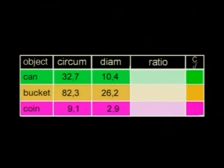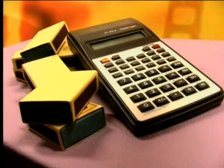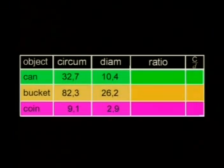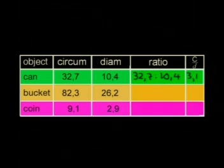We still need to complete this column of the table — it shows the relationship between the circumference and the diameter, written as a ratio. We can use a calculator to work out these ratios. The can has a circumference of 32.7 cm and a diameter of 10.4 cm. We can write this ratio as 32.7 to 10.4. We divide C by D and we get an answer of 3.14.